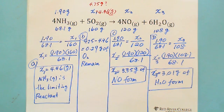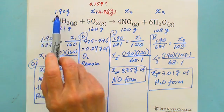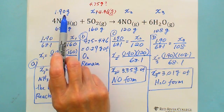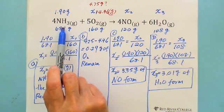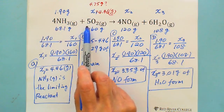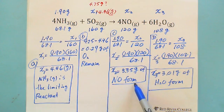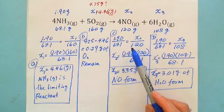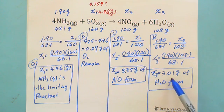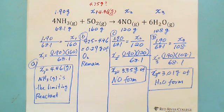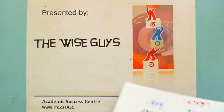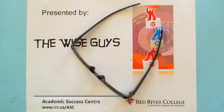So in summary: 1.90 grams of ammonia reacts with 4.46 grams of oxygen, which produces 3.35 grams of nitrogen monoxide and 3.01 grams of water vapor. Thank you very much, have a nice day.